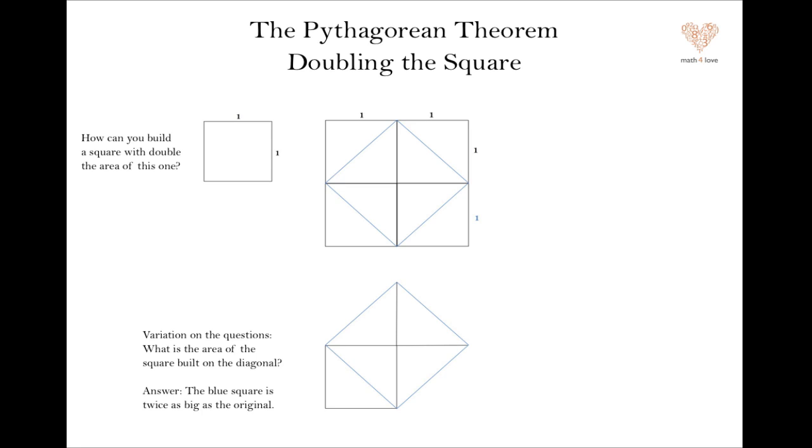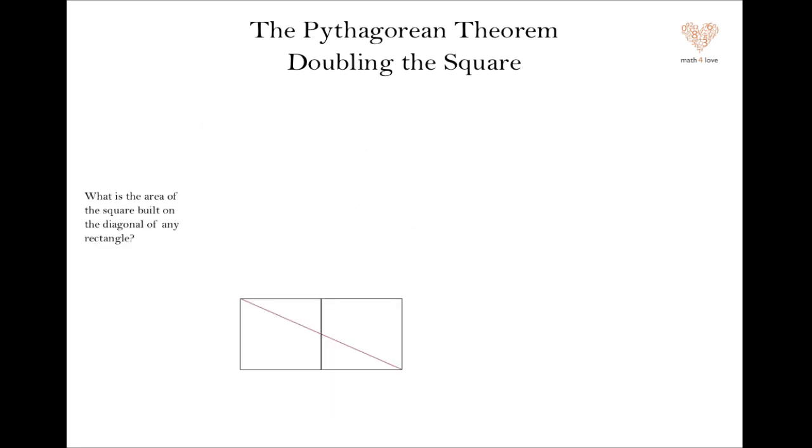I like doing it this way, this varying the question, and it actually gives us a whole new direction to go, which is this. If you take a rectangle, let's say this one by two rectangle, and build a square on its diagonal, what's the area of that square? I'm going to let you try this right now also. So you can pause and see if you can get any ideas.